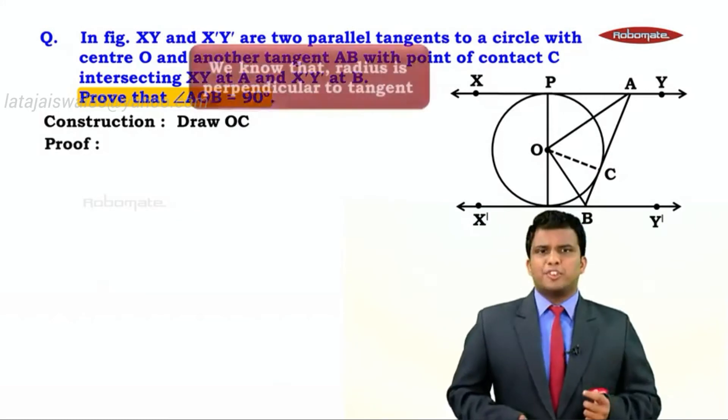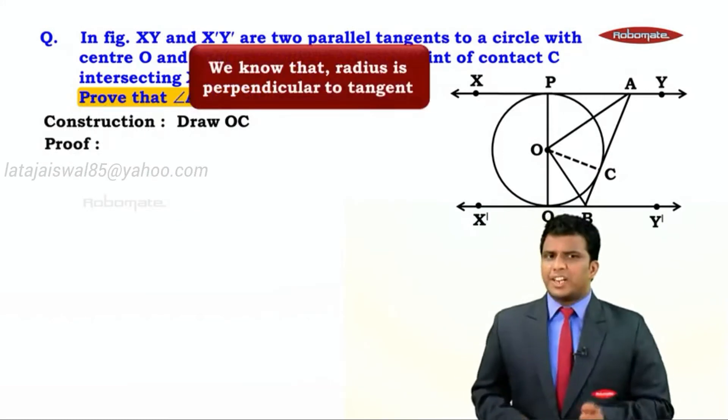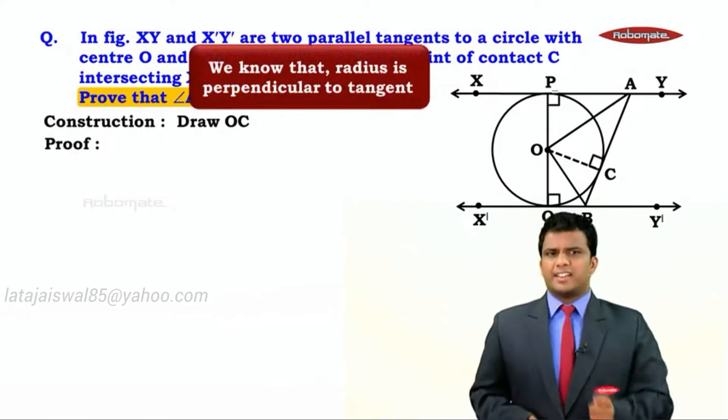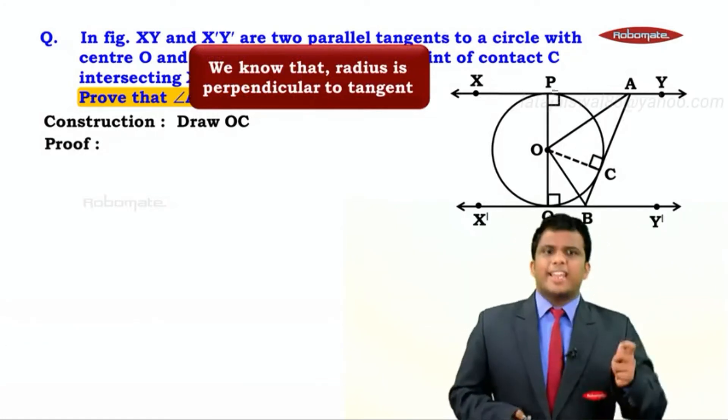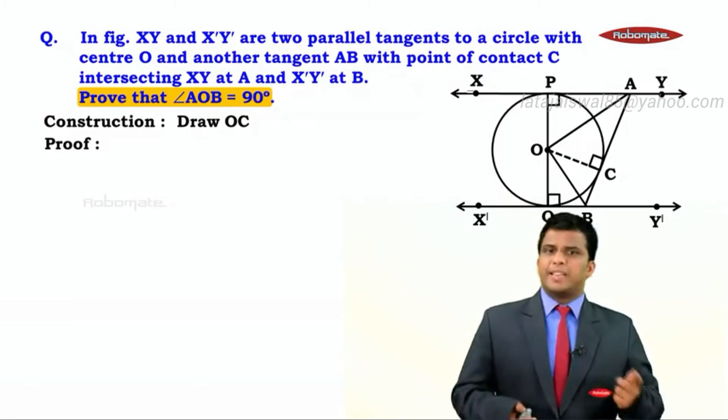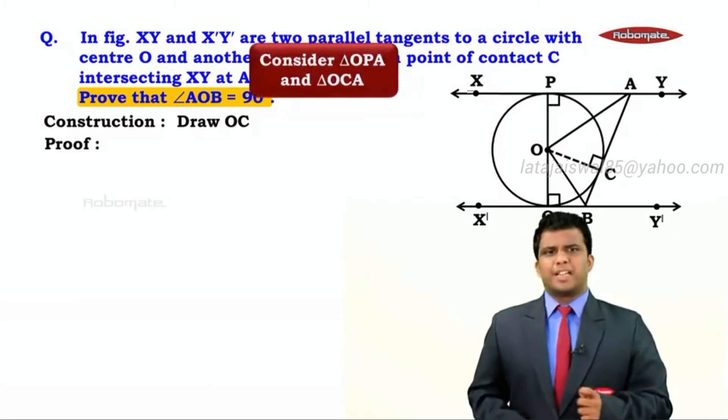We know the property that the radius is perpendicular to the tangent. Hence we can see in the figure the three angles: angle OPA, angle OCA, and angle OQB will be 90 degrees because radius is perpendicular to the tangent.